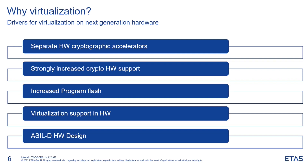We also have increased program flash, which can be used to set up a virtual environment in addition to supporting more features. Then we have virtualization support in hardware — this is a quintessential feature to set up a virtual environment, and all new generation targets support this in hardware. Finally, we have the ASLD hardware design, to support all the safety use cases to ensure freedom from interference. This is extremely critical in a virtual environment where we need to handle safety and non-safety critical VMs in the same system.